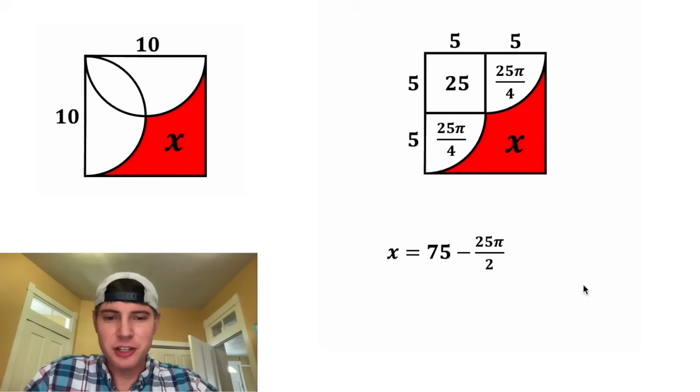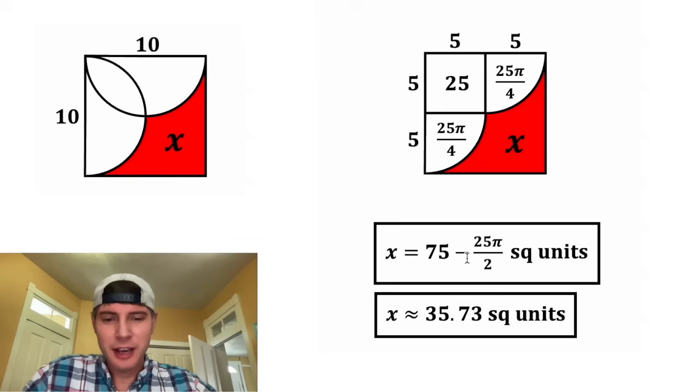And that's the answer to our question. Let's give it a label of square units and put a box around it. The approximate value of this is 35.73 square units. How exciting.